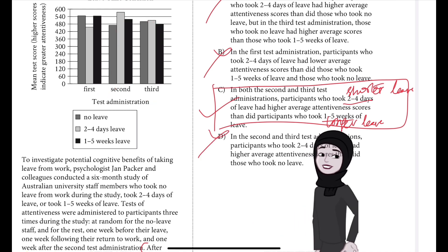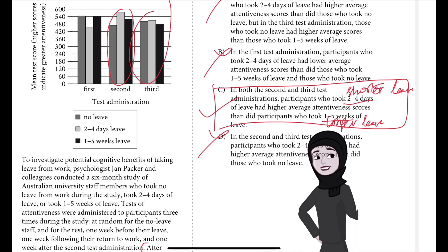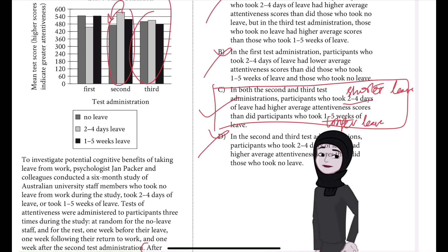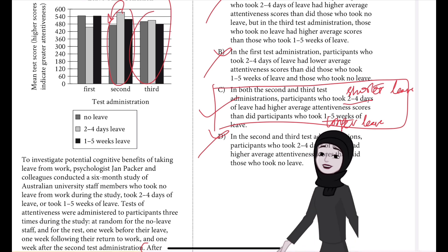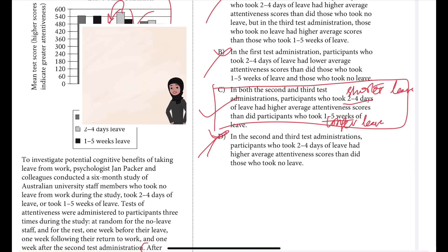Choice D is incorrect because, although the graph does show that in the second and third test administrations participants who took two to four days of leave had higher average attentiveness than those who took no leave, in this choice we are comparing the shorter leave time to those who took no leave. But the researchers' conclusion is about the effects of short leave compared with the effects of long leave — not the effects of short leave compared with no leave. So the results in choice D are irrelevant to the conclusion, and that is why choice D is not correct.